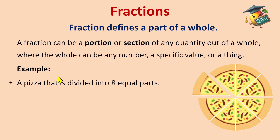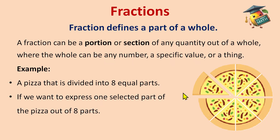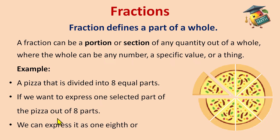For example, a pizza that is divided into eight equal parts. If we want to express one selected part of the pizza out of eight parts, I have selected this one part and I want to eat it — it can be expressed as one eighth. This is one part of the eight total parts, written as one by eight, or one divided by eight, or one upon eight.